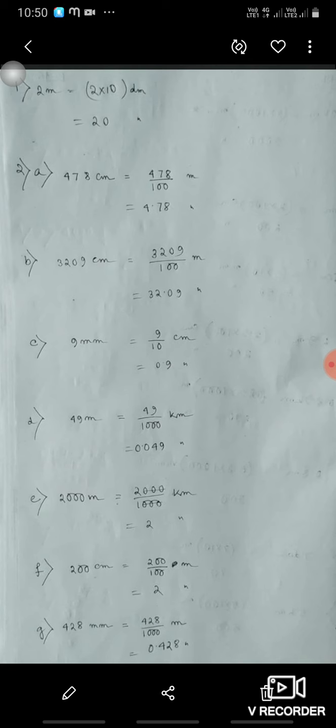478 centimeter means 478 divided by 100 is 4.78 meter. 3,209 centimeter means 3,209 divided by 100 is 32.09 meter. 9 millimeter means 9 upon 10 centimeter, that is 0.9.